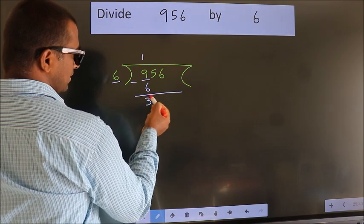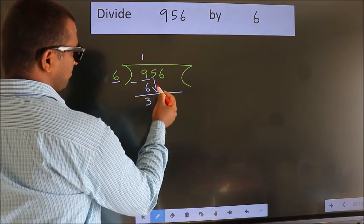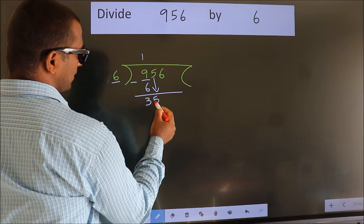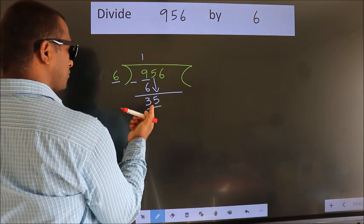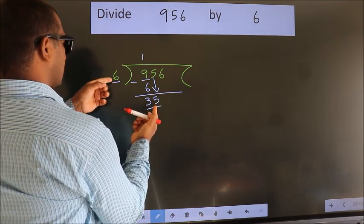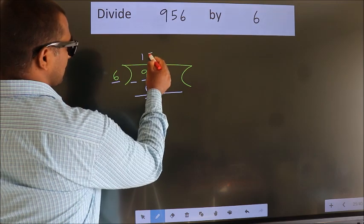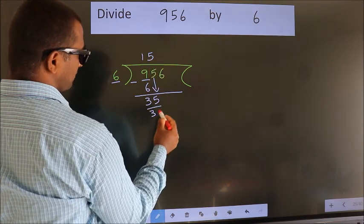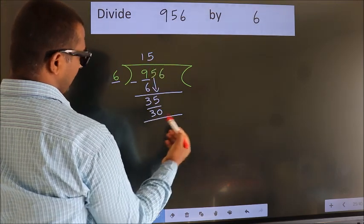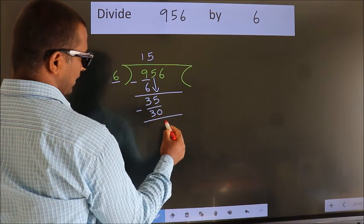After this, bring down the beside number. So, 5 down. So, 35. A number close to 35 in 6 table is 6 5s, 30. Now we subtract. We get 5.